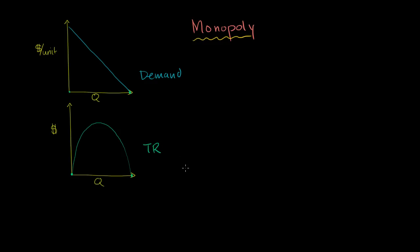From the total revenue curve we can think about what marginal revenue looks like. Marginal revenue tells us: if I increase my quantity by a little bit, how much am I increasing total revenue? That's essentially the slope of the total revenue curve at any given point — the slope of the tangent line. When you start, you have a very high positive slope, the same value as where the demand curve intersects the vertical axis. Then the slope keeps decreasing — less steep, less steep — becomes 0 at the maximum, and then goes negative. That is our marginal revenue curve.